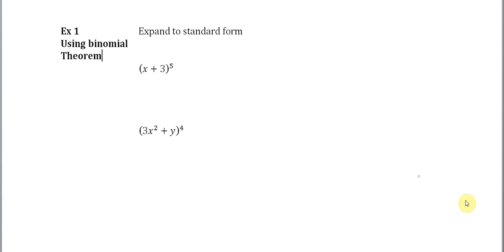In other words, just multiply them out. So we have here x plus 3 quantity to the fifth. So when we expand it...